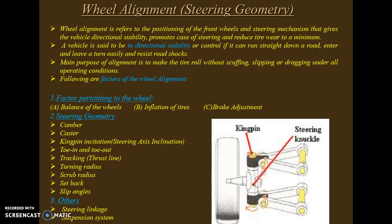The main purpose of alignment is to make the tire roll without scuffing, slipping, or dragging under all operating conditions. Factors affecting wheel alignment include wheel balancing, tire inflation, brake adjustments, and steering geometry. Steering geometry factors include camber, caster, kingpin inclination (steering axis inclination), toe-in, toe-out, tracking, thrust line, turning radius, scrub radius, setback angles, and slip angles. Other factors include steering linkage and suspension system.